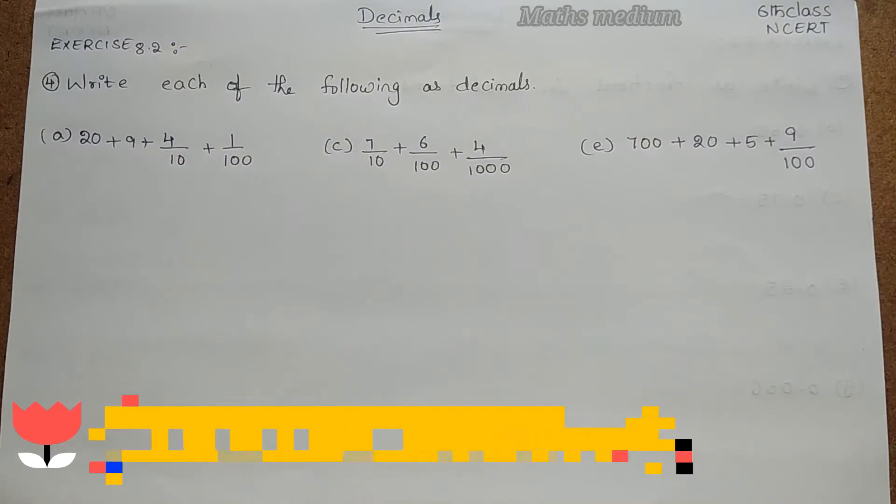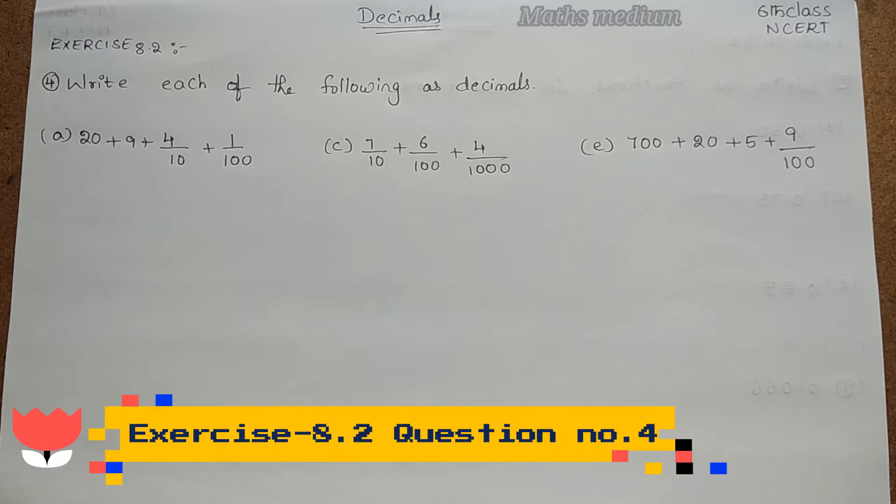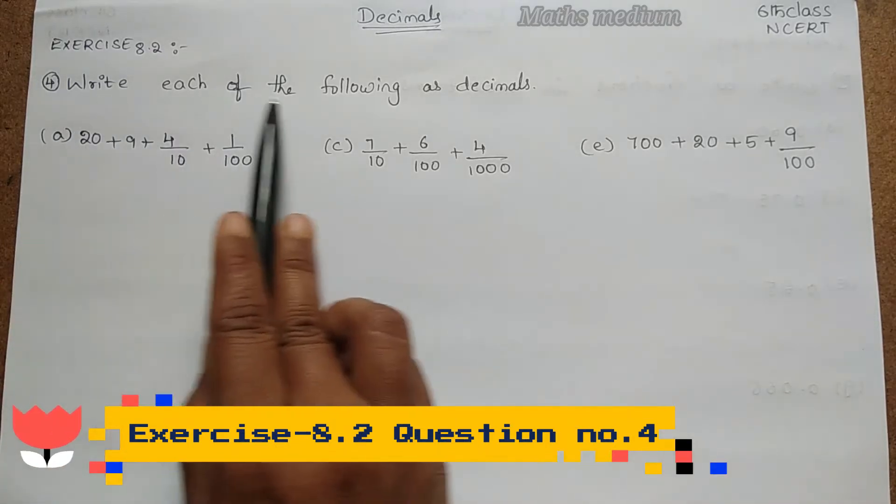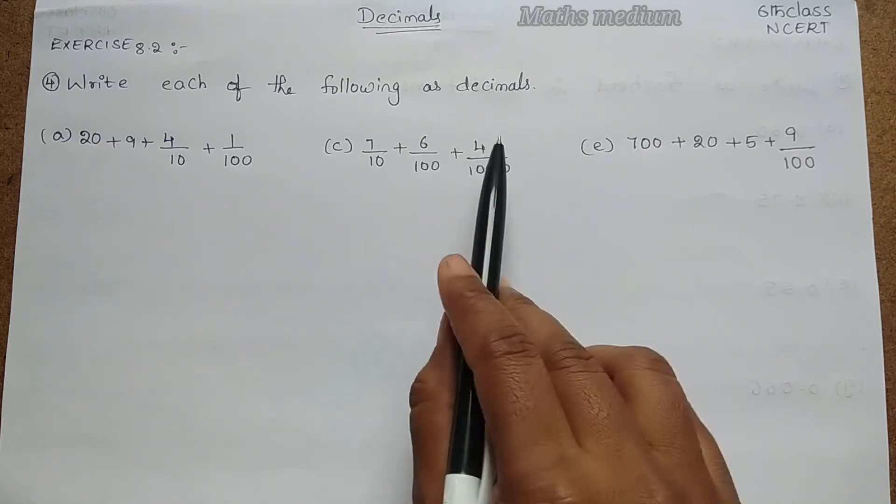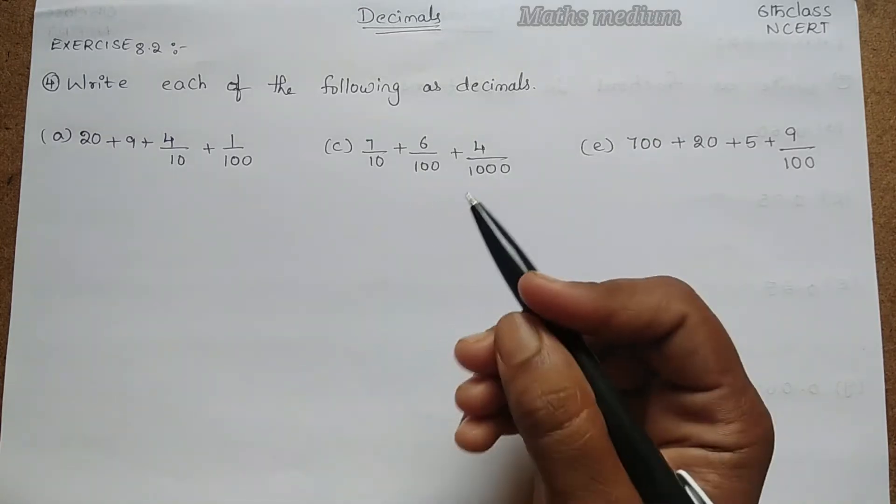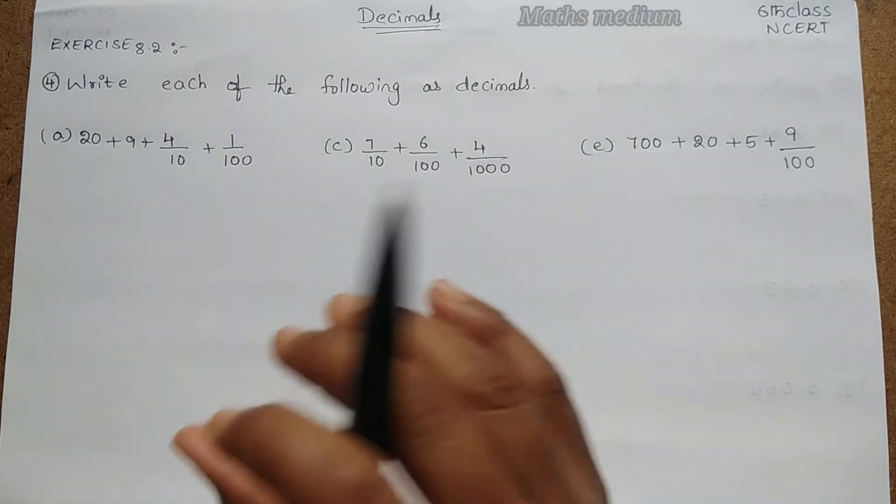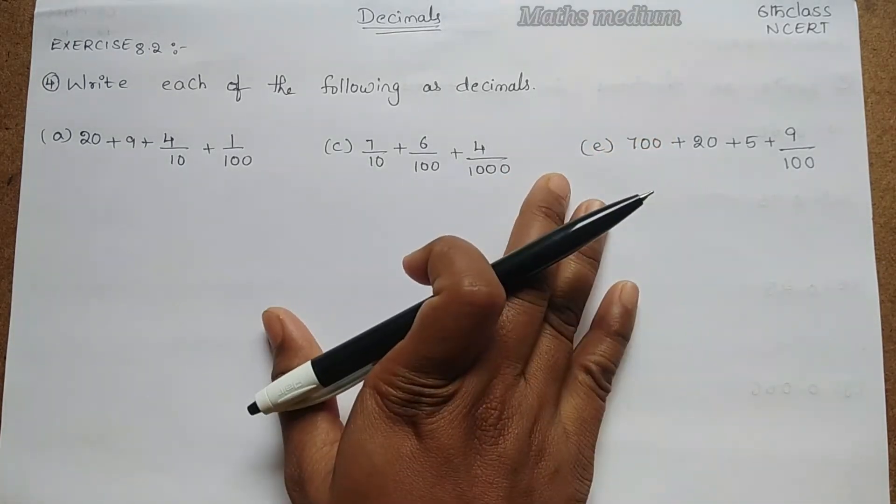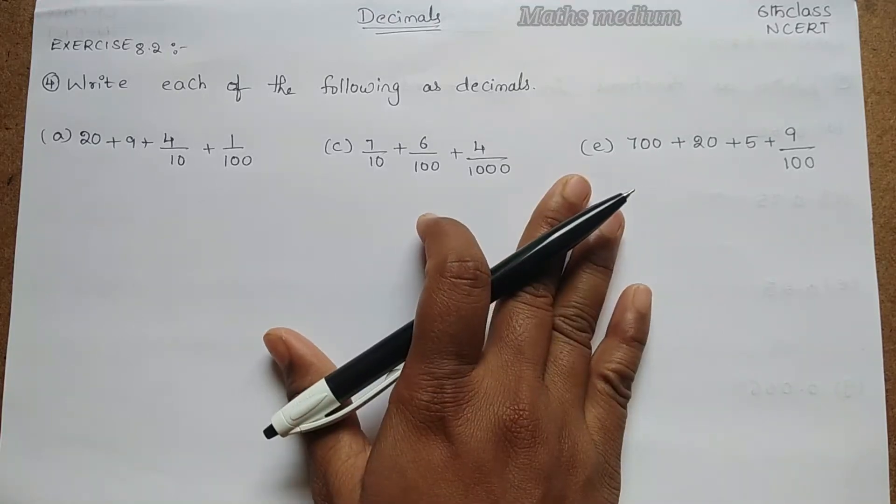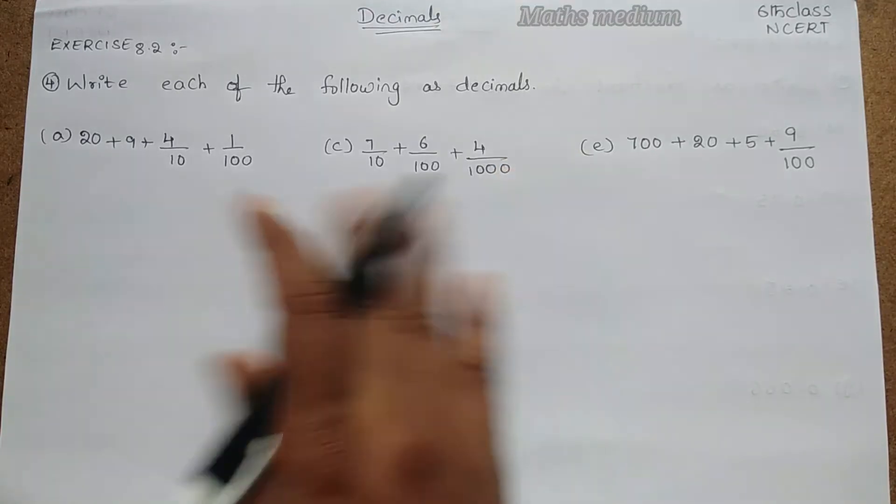Hi, hello, welcome to Maths Medium. Today I came with Exercise 8.2 from Decimals, 6th class NCERT, question number 4. Write each of the following as decimals. So these are the given questions. In previous videos we already learned about the decimals and place values and conversion of place value to a decimal also. So this is in the form of place value, so we have to convert it into decimals.